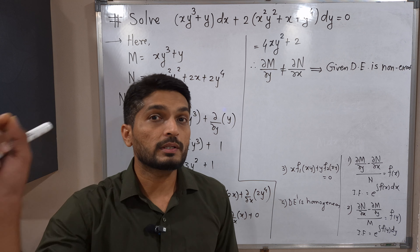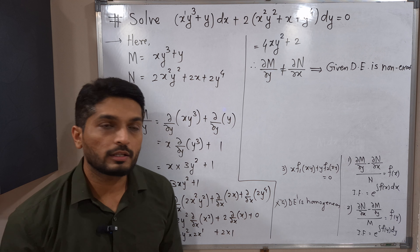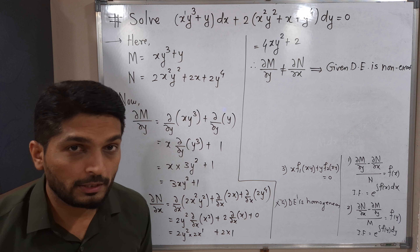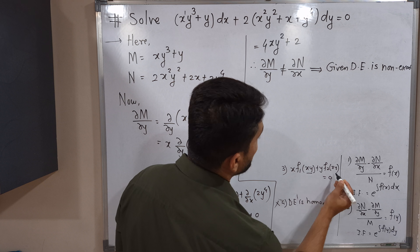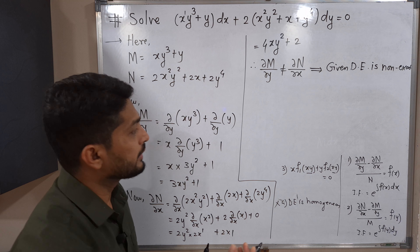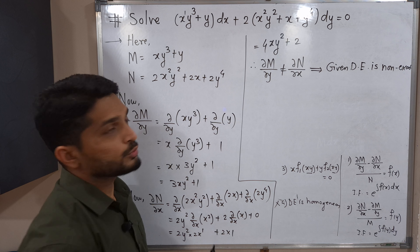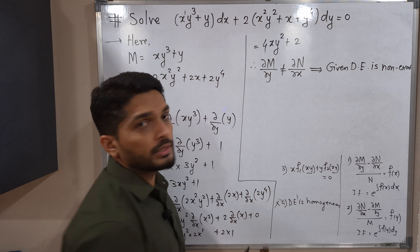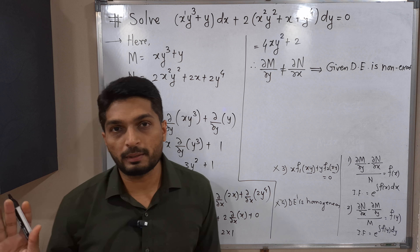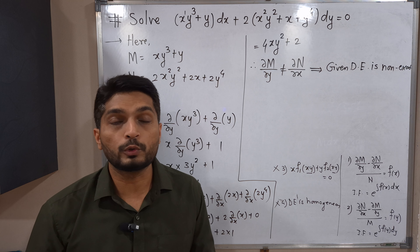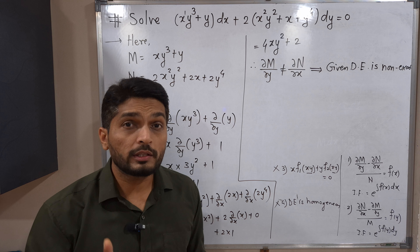Checking Rule 4 (homogeneous): in xy³ the combined power is 1+3=4; in y the power is 1; in 2x²y² the power is 4; in 2x the power is 1; in 2y⁴ the power is 4. The degrees are not all equal, so the equation is not homogeneous — Rule 4 is not applicable. Checking Rule 3: terms like 'x only' and 'y only' appear, so the equation is not in the required format — Rule 3 is also not applicable.